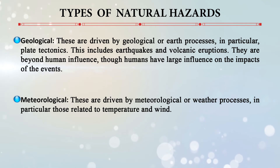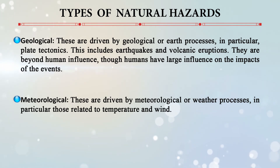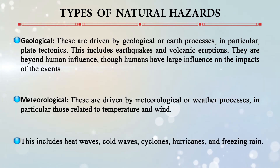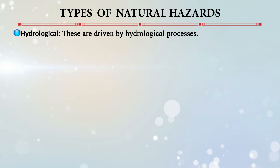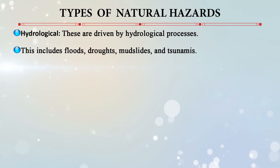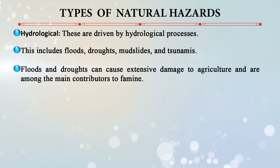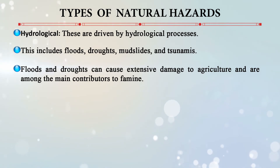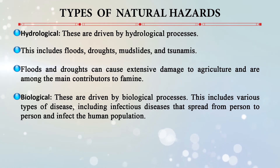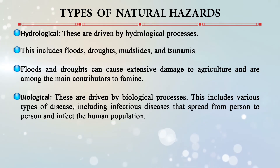Meteorological hazards are driven by weather processes, particularly related to temperature and wind, and include heat waves, cold waves, cyclones, hurricanes, and freezing rain. Hydrological hazards are driven by water or hydrological processes and include floods, droughts, mudslides, and tsunamis — they can cause extensive damage to agriculture and are among the main contributors to famine. Biological hazards are driven by biological processes, including various infectious diseases that can spread from person to person and infect entire populations in the form of epidemics or pandemics.